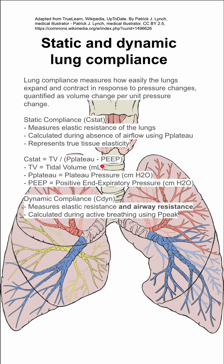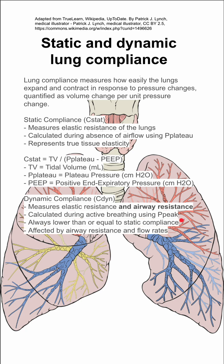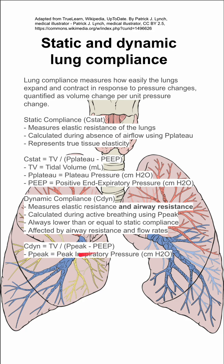Dynamic compliance is a little different. It measures elastic resistance in addition to airway resistance, so it also considers airway resistance because it is dynamic. It is calculated during active breathing rather than the absence of airflow, and it uses peak pressure. It is always lower than or equal to static compliance, and it is affected by airway resistance and flow rates. The equation for dynamic compliance is tidal volume divided by the difference between peak pressure (P-peak, or peak inspiratory pressure) and PEEP.